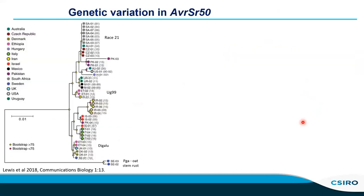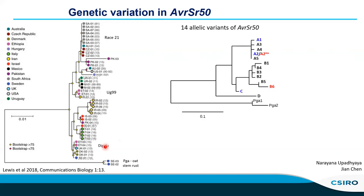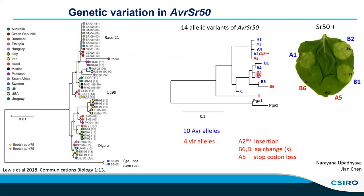We also looked at variation more broadly, using a set of sequences published by Diane Saunders from rust isolates from around the world — including isolates from South Africa and Australia as part of the race 21 lineage, representatives of the UG99 group, and a UK isolate from the Digulu race group. Mining those sequences, we identified 14 different allelic variants of AVR-SR50. A few had already been tested, such as A1 and B6, but for the others we couldn't necessarily predict their phenotype, so we made and tested them all by co-expression with SR50. It turned out there were 10 avirulence alleles and 4 virulence alleles, including the insertion allele I mentioned previously.